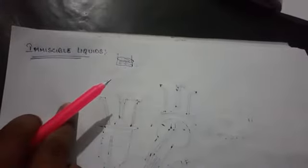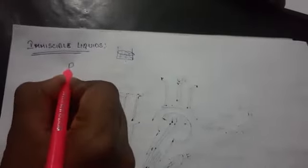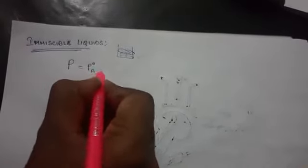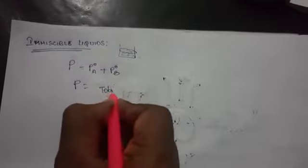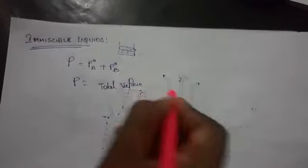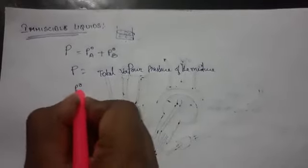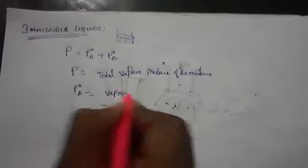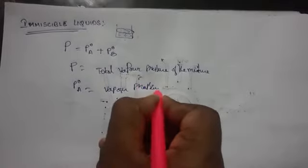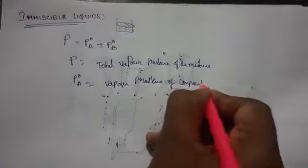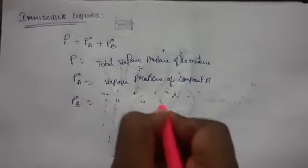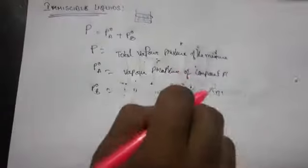According to Dalton's Law, the total pressure exerted by the vapor phase equals the sum of the vapor pressures of the two components. So P is the total vapor pressure of the mixture, P°A is the vapor pressure of component A (one liquid), and P°B is the vapor pressure of component B.